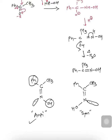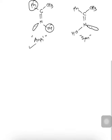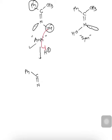In the next step, the ketoxime reacts with H+ from H2SO4. The lone pair of the OH oxygen makes an attack on H+, forming a hydronium-type ion: Ph-C(=N)-OH2+ with CH3. After donation of the lone pair, the oxygen atom carries a positive charge. There will then be migration of the phenyl group from the carbon atom to the nitrogen atom.